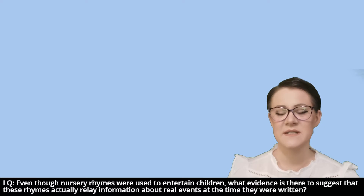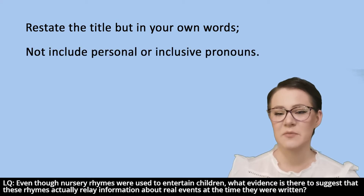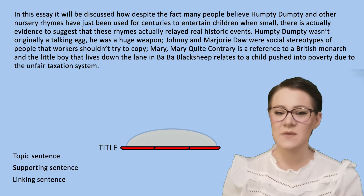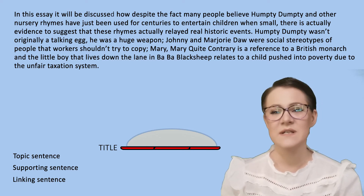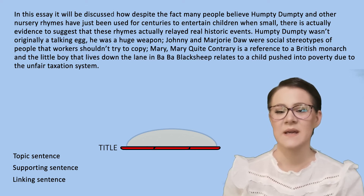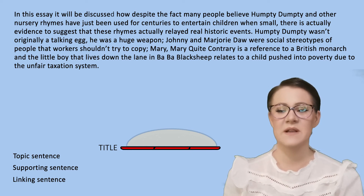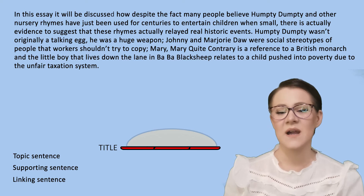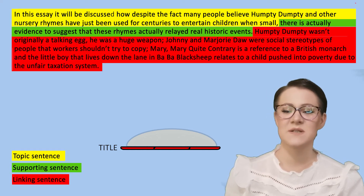You'll remember from the first video in the series that an essay introduction needs to restate the title but in your own words, and not include personal or inclusive pronouns. So I have written: 'In this essay it will be discussed how, despite the fact many people believe Humpty Dumpty and other nursery rhymes have just been used for centuries to entertain children when small, there is actually evidence to suggest that these rhymes relay real historic events. Humpty Dumpty wasn't originally a talking egg — he was a huge weapon. John and Marjorie Dore were social stereotypes of people that workers shouldn't try to copy. And Mary Mary Quite Contrary is a reference to a British monarch, and the little boy that lives down the lane in Baa Baa Black Sheep relates to a child pushed into poverty due to the unfair taxation system.' Here you can see the topic sentence, supporting sentence, and linking sentence, and I have signalled in what order I will discuss the nursery rhymes I have mentioned.